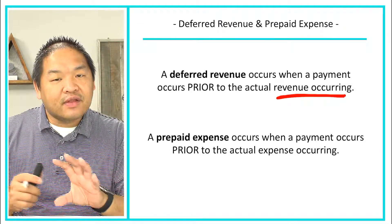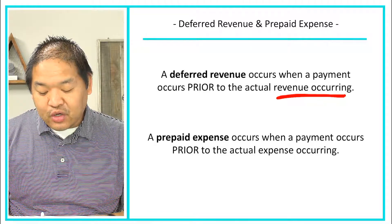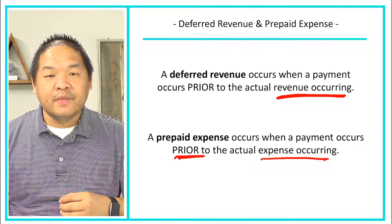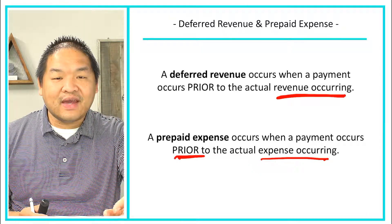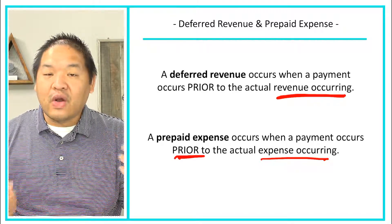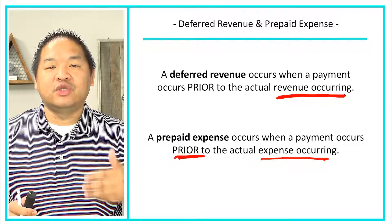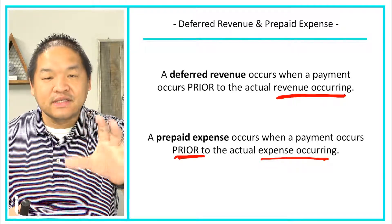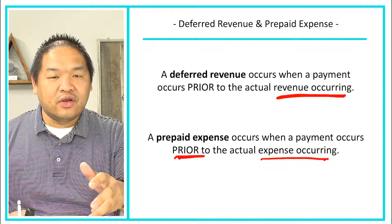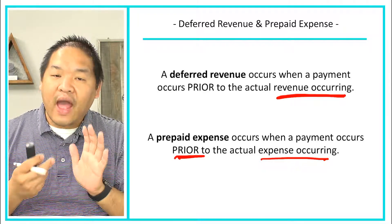Prepaid expense is along the same lines, except you are now the customer rather than the person providing the service or product. A prepaid expense occurs when a payment occurs prior to the actual expense occurring. You pay for something in advance, but because you haven't received a service yet, an expense hasn't happened. It's like buying a gift card — the expense happens when you use the gift card, not when you buy it. Similarly, with a Starbucks card, the expense happens when you use the app to purchase, not when you reload it.